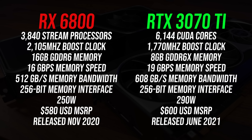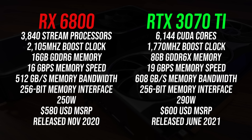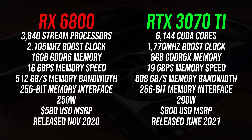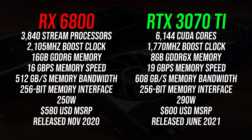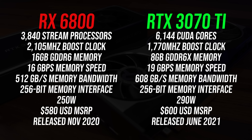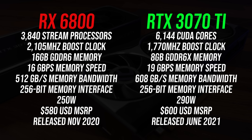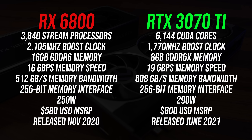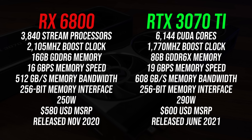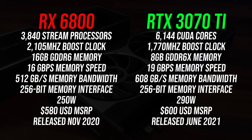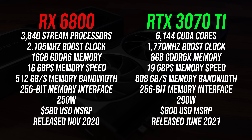Let's start with the differences in specs. The first obvious difference is that the 6800 has double the VRAM capacity compared to the 3070 Ti, though the GDDR6X memory in the Nvidia option is faster. I've chosen to do this comparison because in terms of MSRP, the 3070 Ti is meant to be just $20 more than the 6800, but as we all know availability is scarce and prices are useless at the moment.